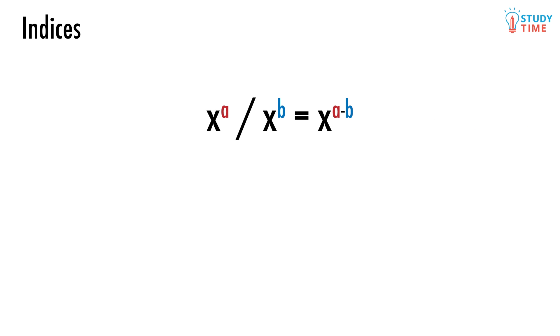The second index law works in the exact opposite way to the first one. It tells us what to do when two expressions are being divided. x to the power of a divided by x to the power of b equals x to the power of a minus b.